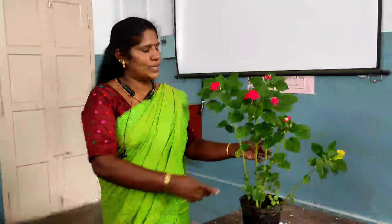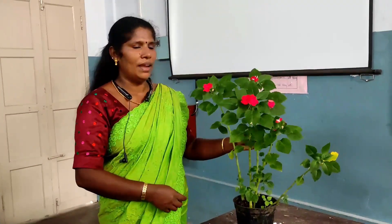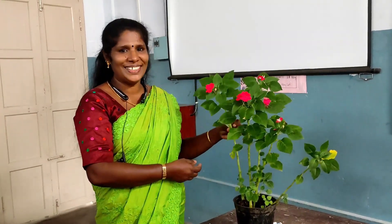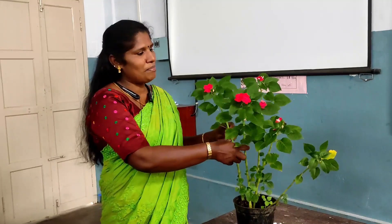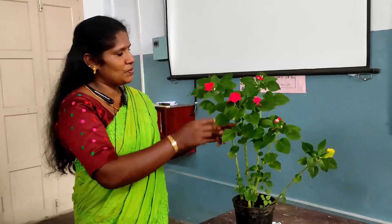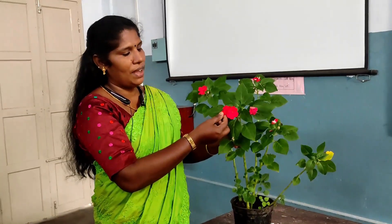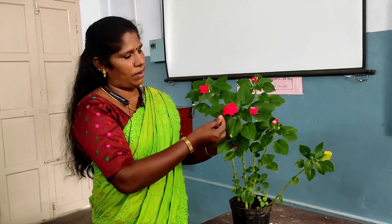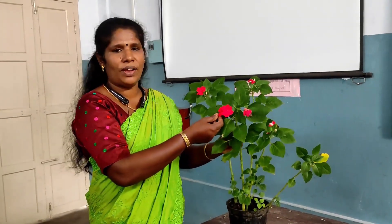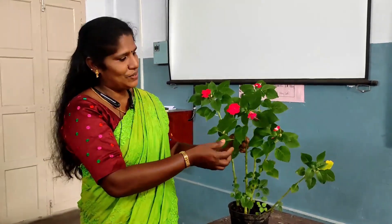Okay children, what is this? What is this? This is a flower. What is this? This is a flower. What is the color of this flower? Red color. Very good.